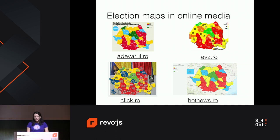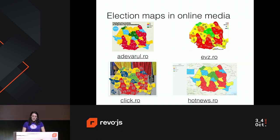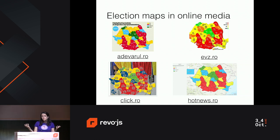I actually looked in the Romanian online media, and these maps that I'm showing here are what you can actually find. They map the predominant party on the counties, and you get most of them are not interactive — Hot News was the only one that actually had an interactive map. And when I look at these maps, I'm like, okay, that's interesting, you can read some insights there, but I would like to see more detail. I would like to see if there are differences maybe between cities and rural areas, maybe in that big county over there, smaller regions that voted maybe for a different party.